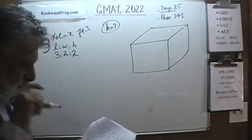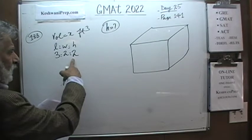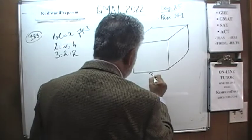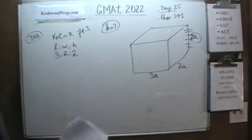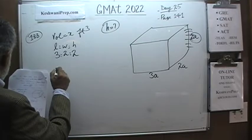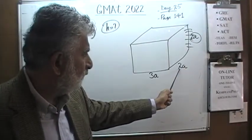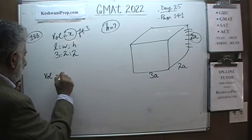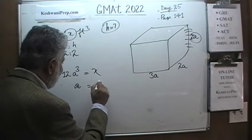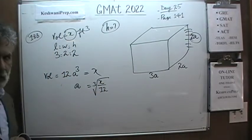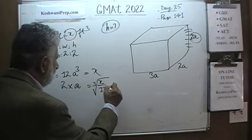The height is 2 parts. Let the dimensions be 3a, 2a, and 2a. The volume is 3a × 2a × 2a = 12a³ = x. Solving for a: a = (x/12)^(1/3), the cube root of x/12. Since we're not interested in a itself but in the height, which is 2a, we multiply by 2: height = 2·(x/12)^(1/3).